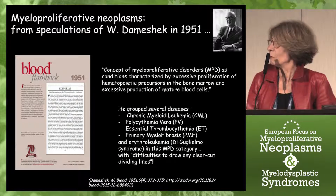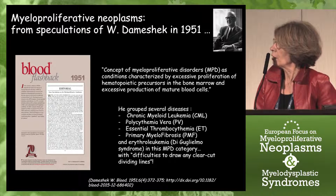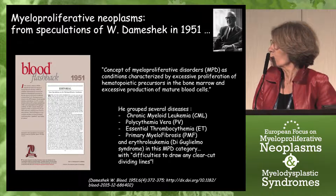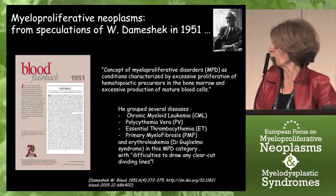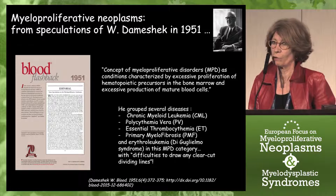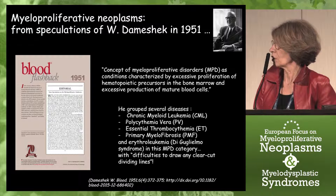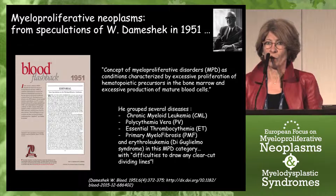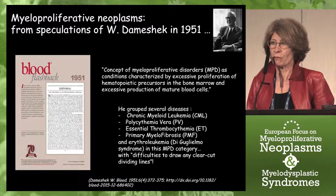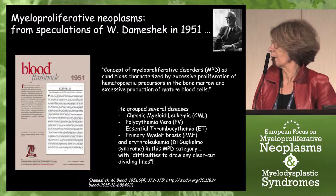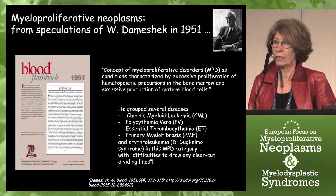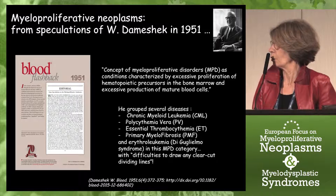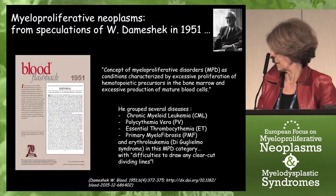As I recently acknowledged in the flashback from Blood, William Dameshek was the first to propose the concept of myeloproliferative disorder as a condition characterized by excessive proliferation of hematopoietic progenitors in the bone marrow and excessive production of hematopoietic blood cells. He grouped several diseases, including CML, polycythemia vera, essential thrombocythemia, and primary myelofibrosis with erythroleukemia in this category, with the difficulty to draw a clear dividing line.